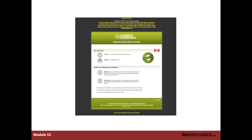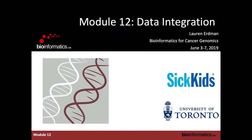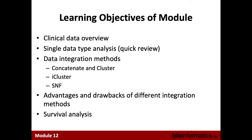We've got the Creative Commons license, so you can use these slides — please share them widely, only the correct stuff of course. Today we're going to talk about data integration, specifically all the different kinds of clinical and genomic data. We'll talk about single data type analyses, clustering methods, data integration methods — concatenating cluster, iCluster, and similarity network fusion — advantages and drawbacks, and then survival analysis. In the lab we'll do similarity network fusion and survival analysis in R.